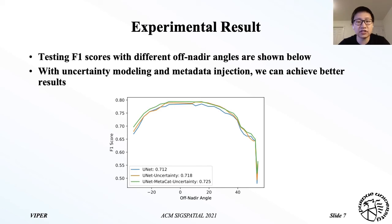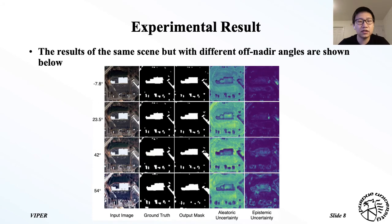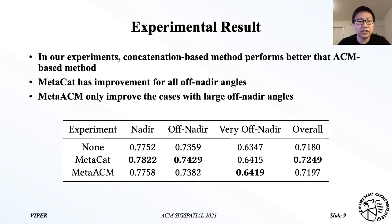With the concatenation-based metadata injection approach, we can further improve the performance for all off-nadir cases. This figure shows the result of the same scene but with different off-nadir angles. You can see that as the off-nadir angle gets larger, the uncertainty maps highlight more regions, indicating a larger noise level from the input image. This table compares the performance of the two metadata injection approaches, showing that both methods achieve good performance, especially for cases of larger off-nadir angles.